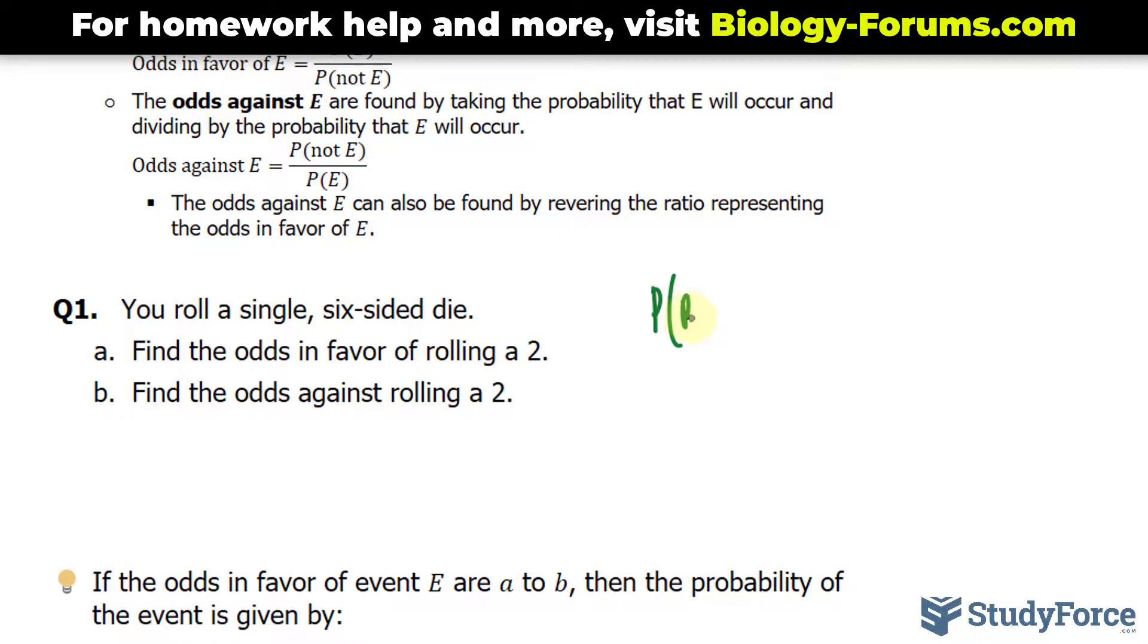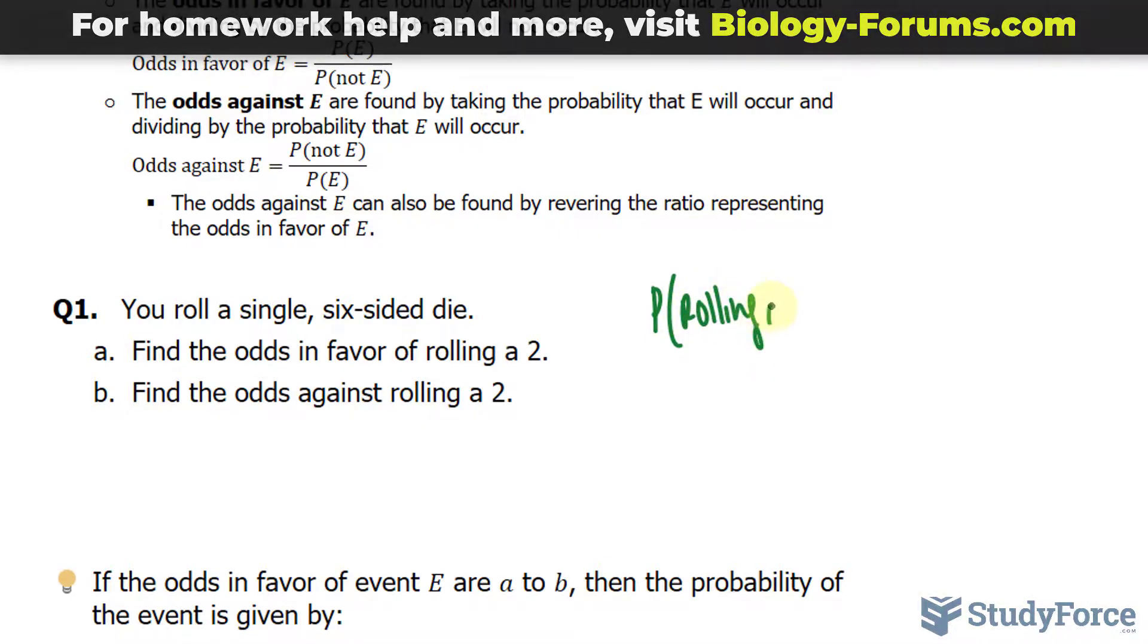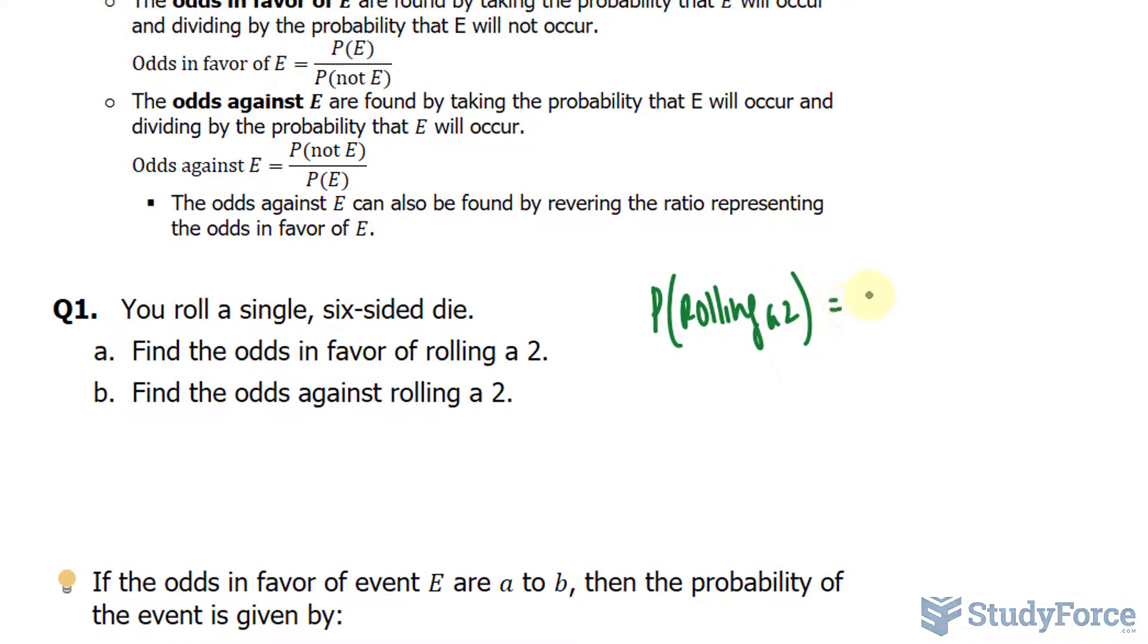So the probability of rolling a 2 is equal to 1 over 6. The probability of not rolling a 2 is 5 out of 6.